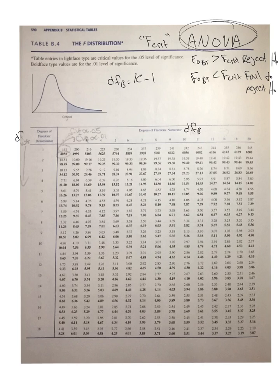On the other side, we have degrees of freedom within. Degrees of freedom within equals capital N — the total number of people in the entire sample — minus K. So if you have five groups of five, your DFB would be four (five minus one), but your DFW would be twenty-five minus five, or twenty.